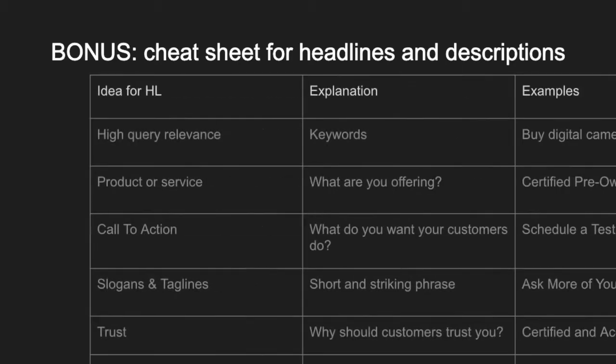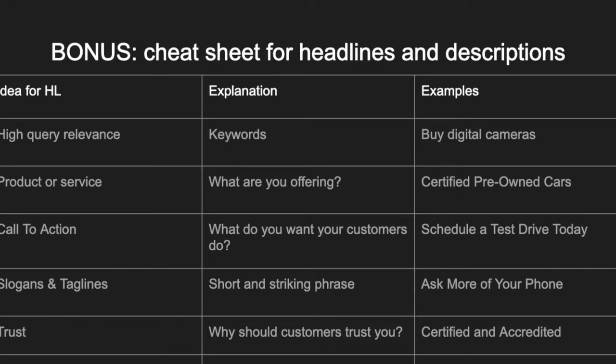Here's a bonus on ideas for creating headlines and descriptions. High query relevance — essentially a keyword you would put in a headline, like 'buy digital cameras.' You could also use a product or service, such as 'certified pre-owned cars.' It could be a call to action, like 'schedule a test drive today.' You can also use slogans and taglines — if it's a short fitting phrase, like 'ask more of your phone.' And trust — something like 'certified and accredited' could be a great headline choice.